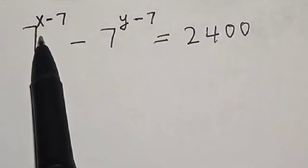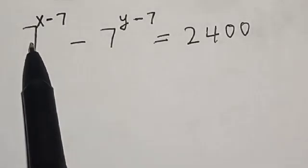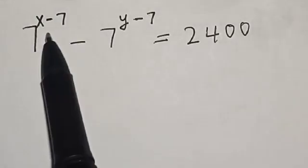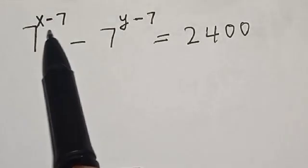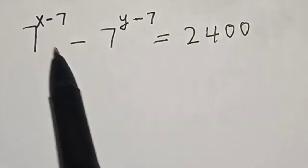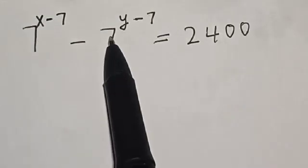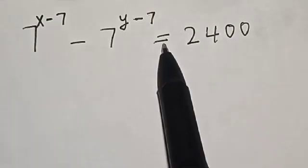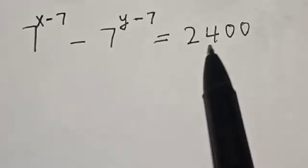Hello, welcome to Math G's. In this class, we want to find the value of s from this given equation: 7 raised to power x minus 7, minus 7 raised to power y minus 7, is equal to 2400.